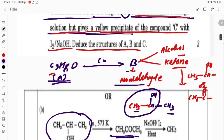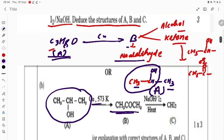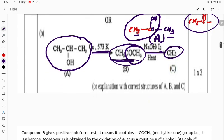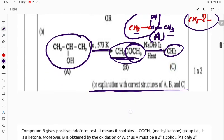The molecular formula of A - when you are passing with 573 kelvin it will give the ketone. Ketone has this group, it will give the iodoform test. So this is A, B, C.